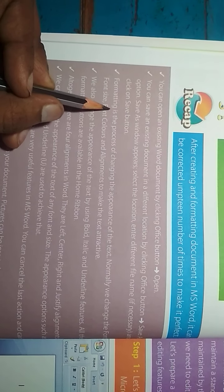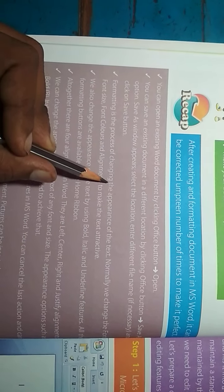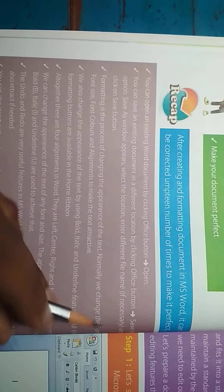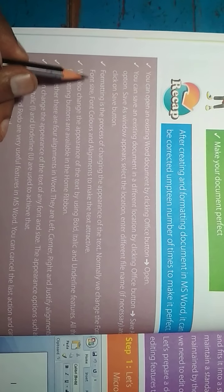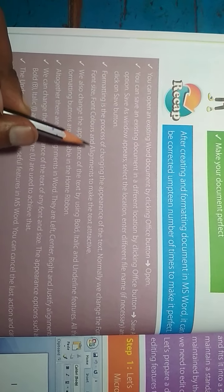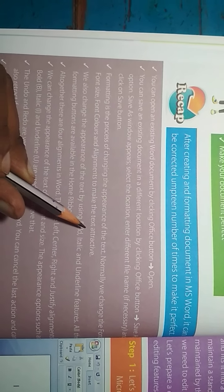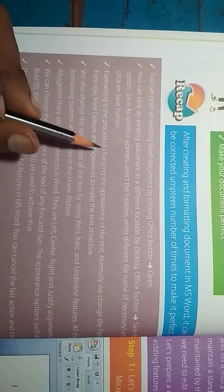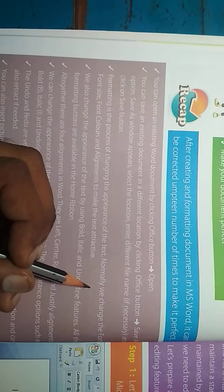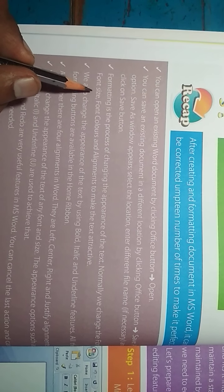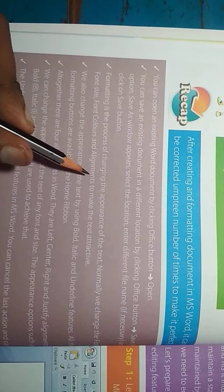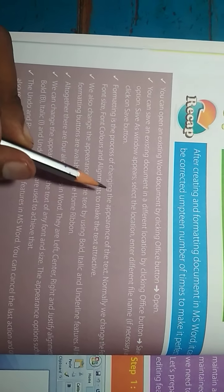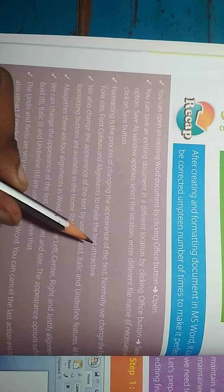Point number three: Formatting is the process of changing the appearance of the text. Normally we change the font, font size, font colors, and alignments to make the text attractive. Formatting में text को change करते हैं — text का size, different colors, और different alignments set करते हैं, जिससे हम अपने page को attractive बनाते हैं।